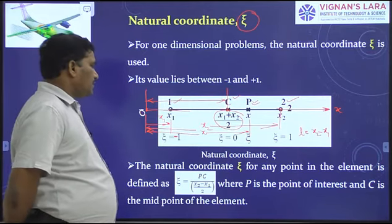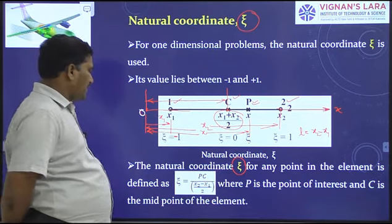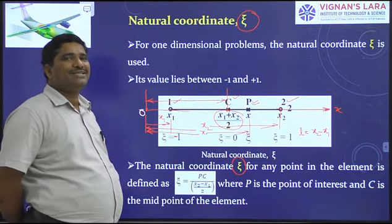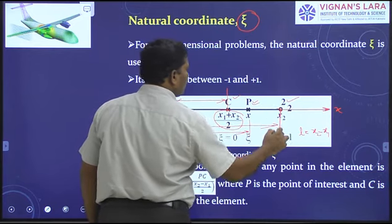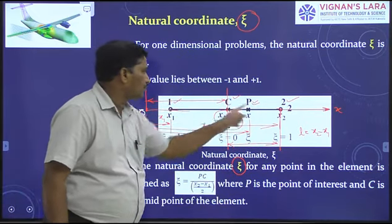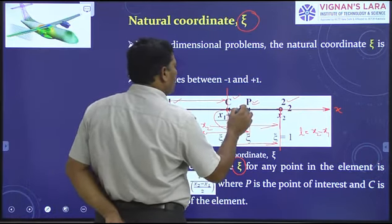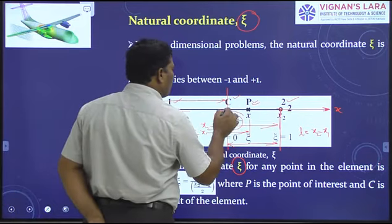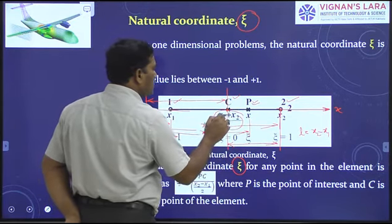My interest is to derive the natural coordinate ξ for any point in the element. I define ξ as PC divided by (x2 − x1)/2, where (x2 − x1)/2 is half the length of the element — that is, the distance of node 2 from C. The distance of P from the coordinate origin is x. The distance PC equals x minus (x1 + x2)/2.